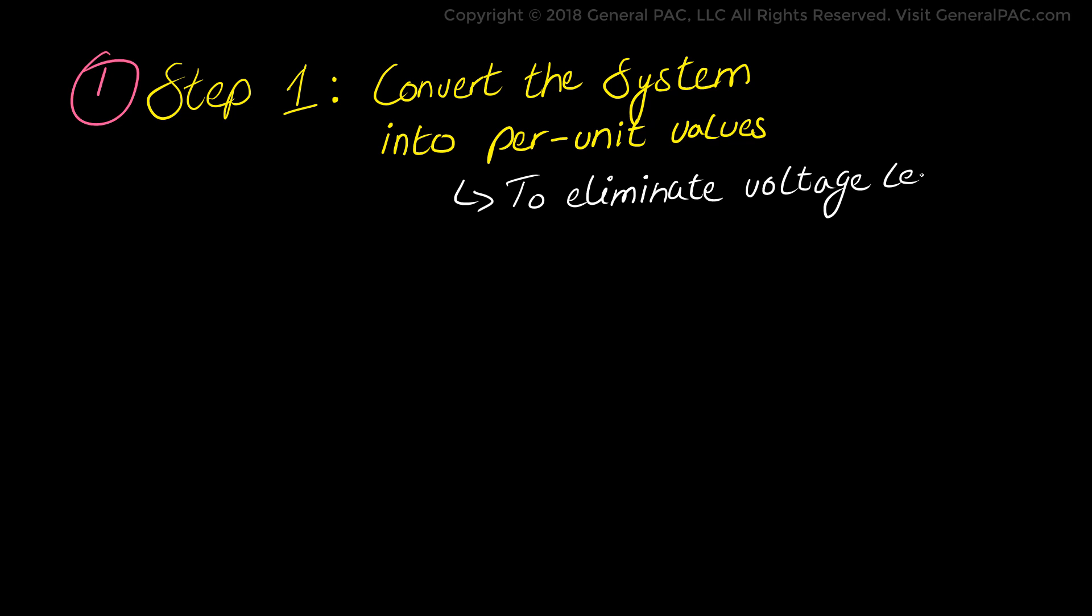So in step 1, the first step is to actually convert the system into per unit values. Now the reason why we convert it into per unit values is because we want to eliminate the voltage levels that occur in power systems due to voltage transformation. So if you have a low voltage to a high voltage power transformer or a high voltage to a low voltage power transformer, it adds an incredible amount of complexity when calculating fault currents.